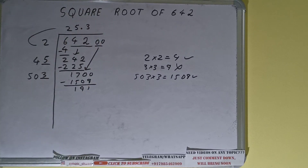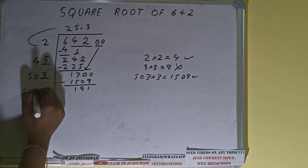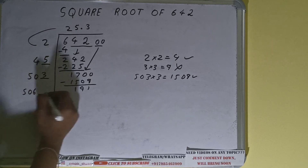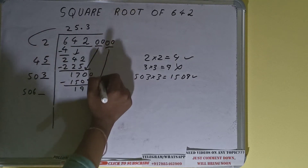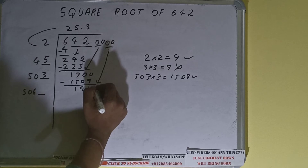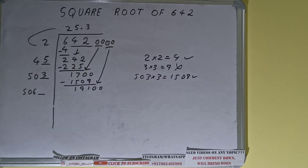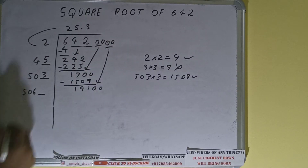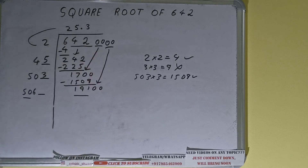We did 503 into 3. To add both: 503 plus 3 will be 506. Keep 1 digit extra. This number we need to make bigger, so bring the next pair of zeros down and it will become 19,100. Compare 50 with 191 — we can try 3 times.